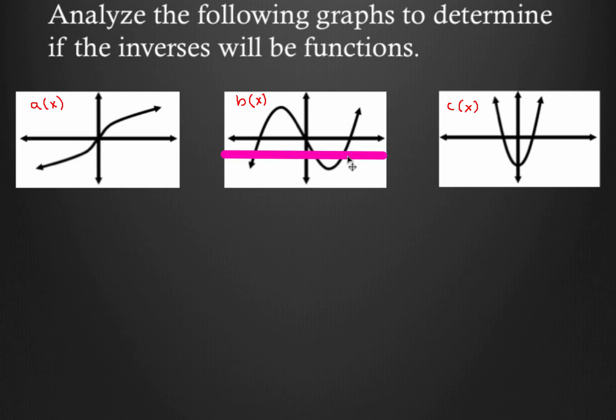Now let's move over here to b of x. Check this out. Look at that right there. In that particular spot, I've got three different places where that horizontal line intersects b of x.